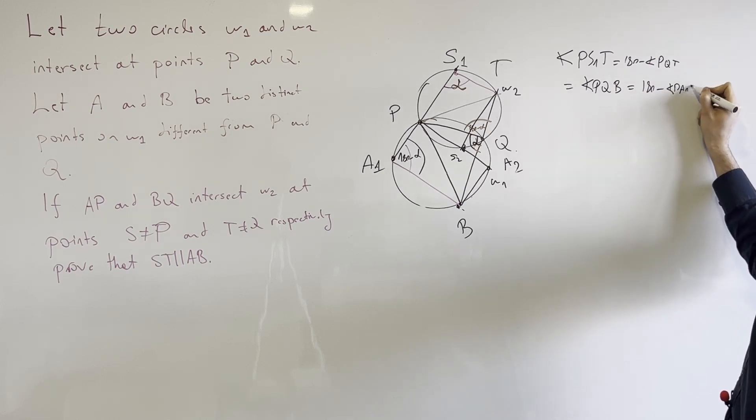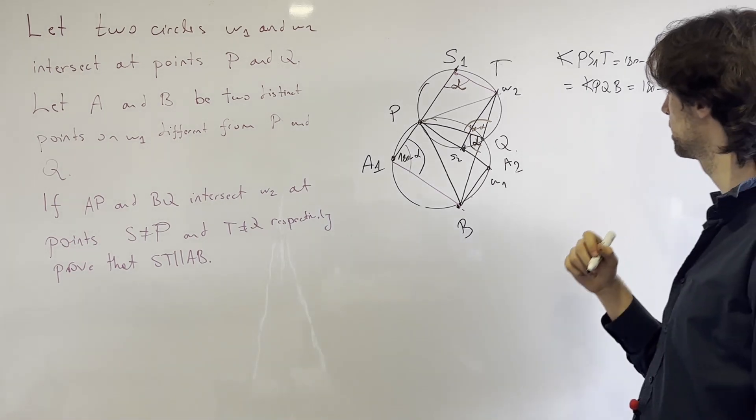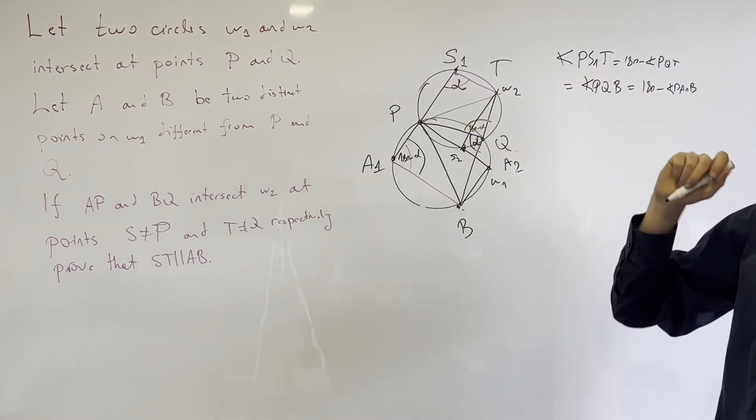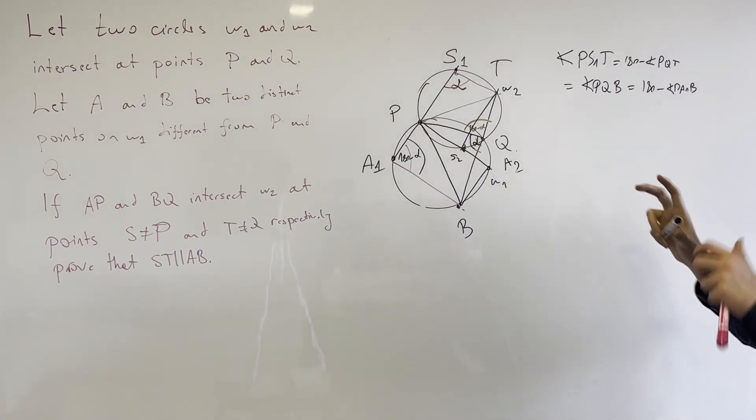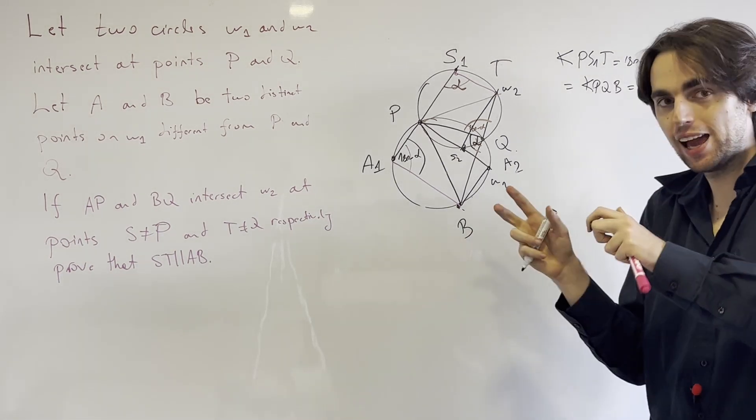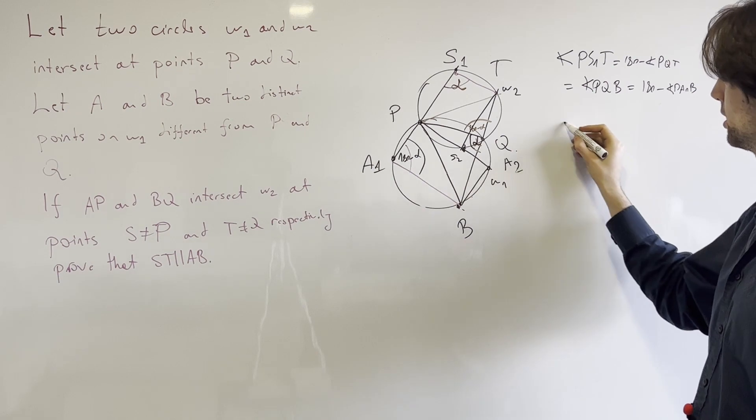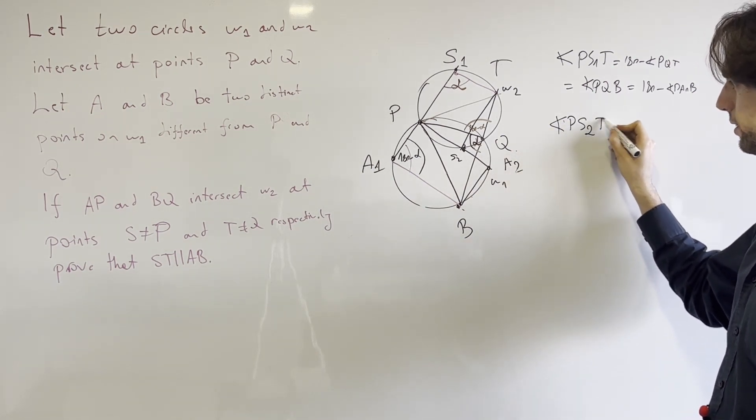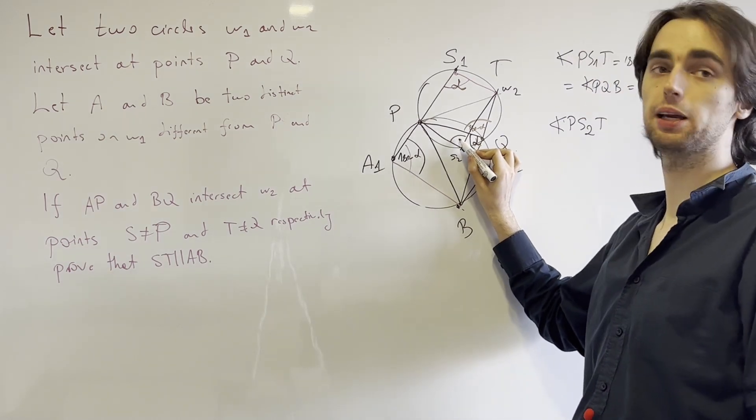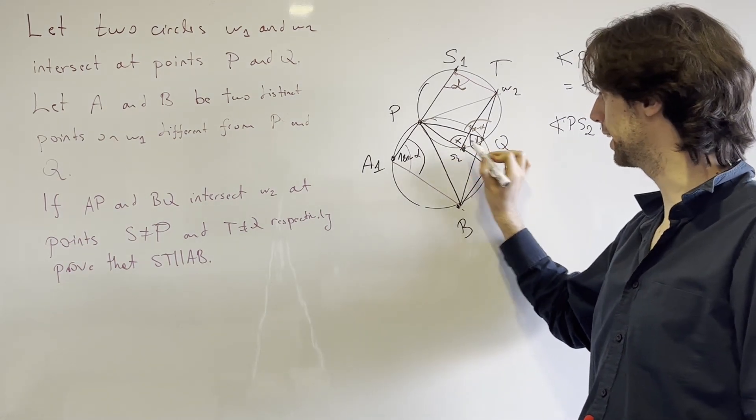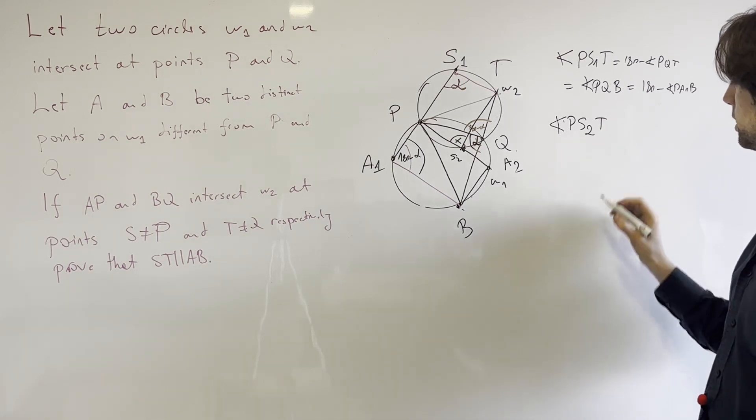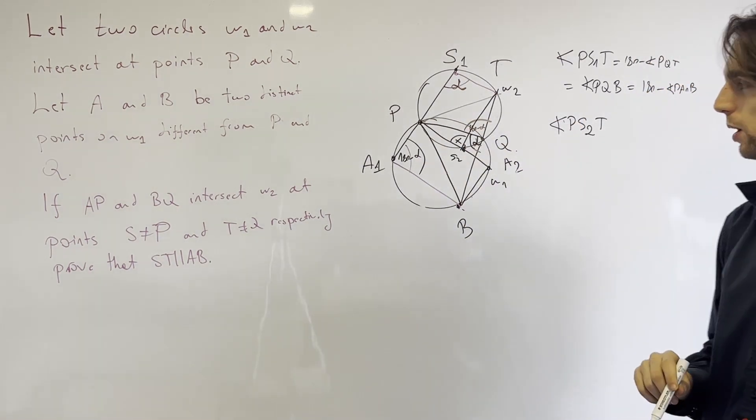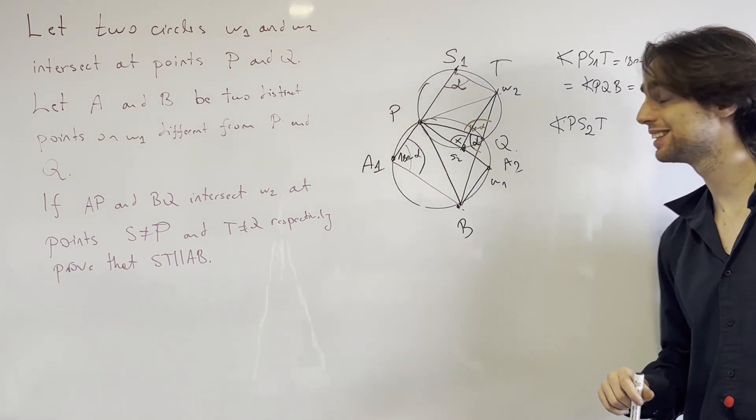Now let's see what happens when we switch S1 and S2, just to get a sense of what the angles may be. So we might get the angle PS2 and T, so that's this angle right here. Let's label it something, let's call it x.